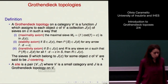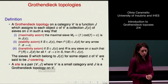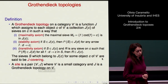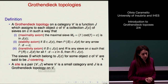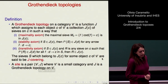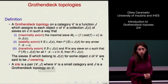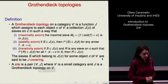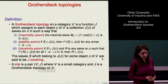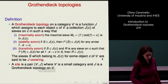Let's introduce the fundamental definition of Grothendieck topology on a category, which is meant to replace the notion of covering of an open set in a topological space by a family of open subsets. A Grothendieck topology on a category is a way of assigning to each object a collection of sieves on that object satisfying some natural conditions. First, we require the maximality axiom: the maximal sieve on each object should belong to the topology. Then we have the pullback stability axiom: any pullback of a sieve belonging to the topology should again belong to the topology.